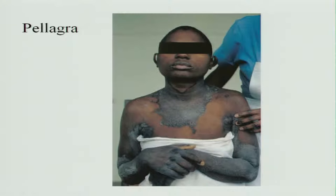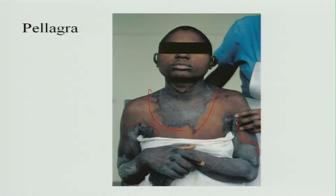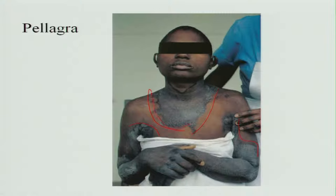Pellagra looks like this: the areas exposed to the sun show dermatitis — they become very dark with a symmetric appearance on both sides. It looks like a necklace on the neck, and you can see both hands affected by the dermatitis.